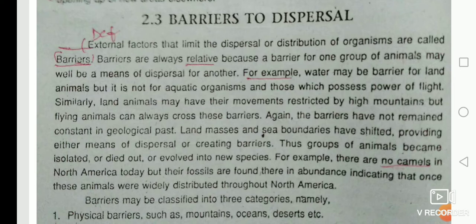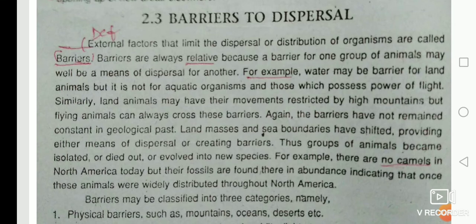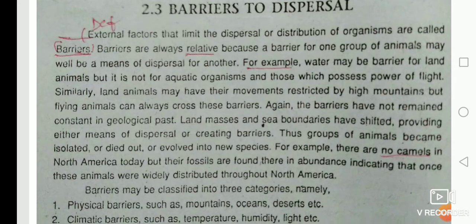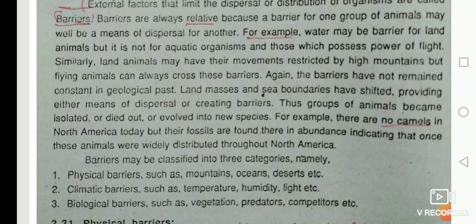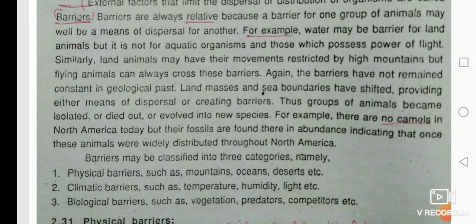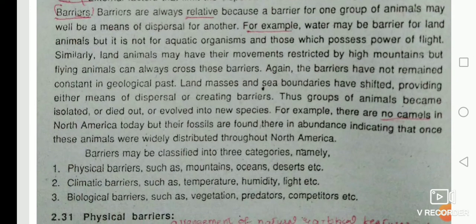A crow has feathers and the ability to take flight and cross a large river, but a sheep cannot cross that large river. So water is a barrier for the sheep but not for the crow.